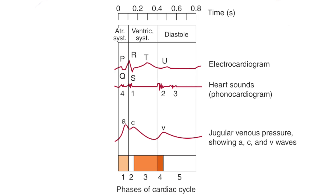Now let's look at the jugular venous pressure. The A wave represents atrial contraction. C is ventricular contraction. The X descent occurs during the collection of blood in the atria, as the pressure decreases in the jugular veins. After blood has been collected in the atria, the pressure increases in the jugular veins — this is the V wave. During ventricular diastole, the valves open and the atria are emptied, and the pressure in the JVP decreases again — this is the Y descent.